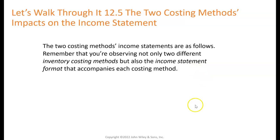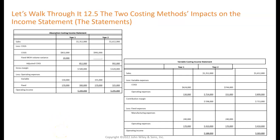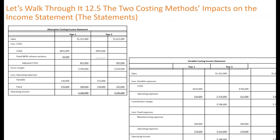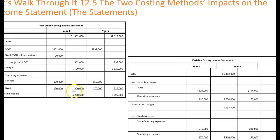Here are examples of these statements. On the absorption basis, there's our cost of goods sold, then a volume variance of $20,000 increasing cost of goods sold, our gross margin, and variable and fixed operating expenses, giving operating income of $200,000. In year two, there's no volume variance; adjusted cost of goods sold is $992,000, gross margin is $620,000, and with operating expenses, income is $295,000.